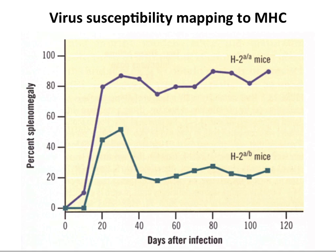MHC proteins also encode susceptibility or resistance to virus infections. Island populations, which are relatively isolated, tend to have less broad MHC composition and tend to be more susceptible to viral diseases. In mice, two different H2 haplotypes show dramatically different susceptibility to the same virus, demonstrating that the nature of MHC molecules that present antigen is a major influence on disease susceptibility.